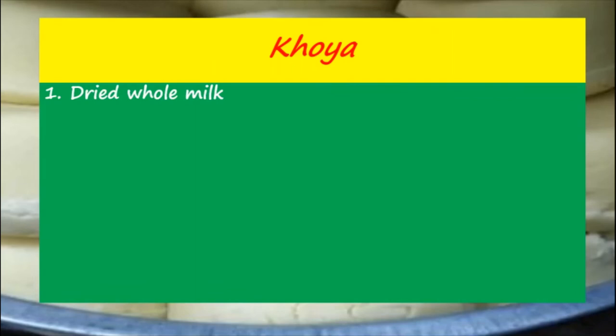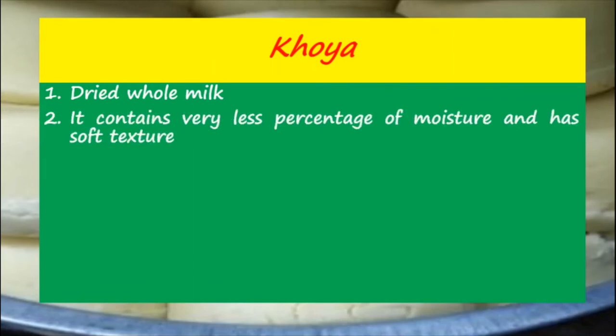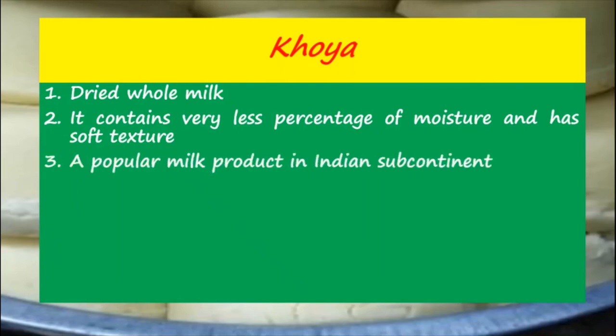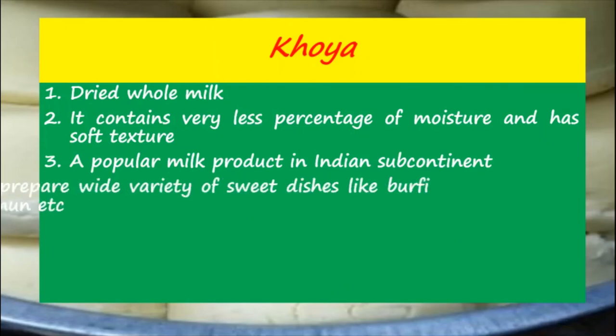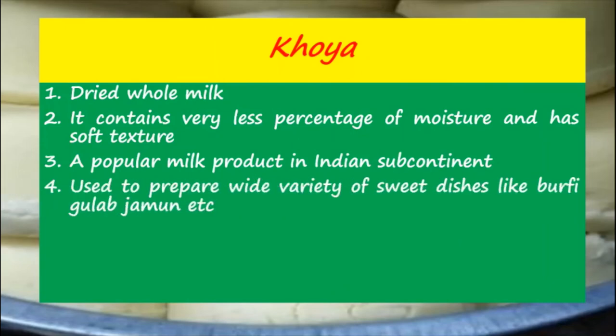Khoya is a dried whole milk. It contains a very low percentage of moisture and has a soft texture. It is a popular milk product in the Indian subcontinent, used to prepare a wide variety of sweet dishes like burfi, gulab jamun, etc.